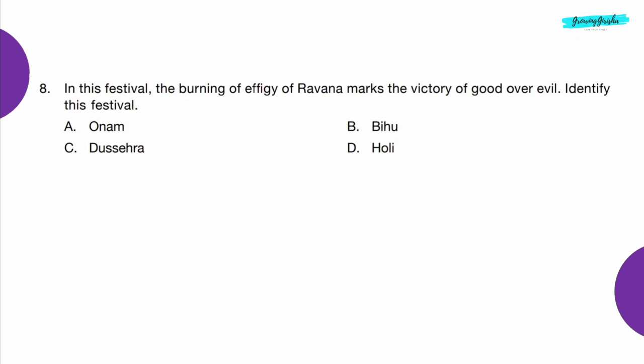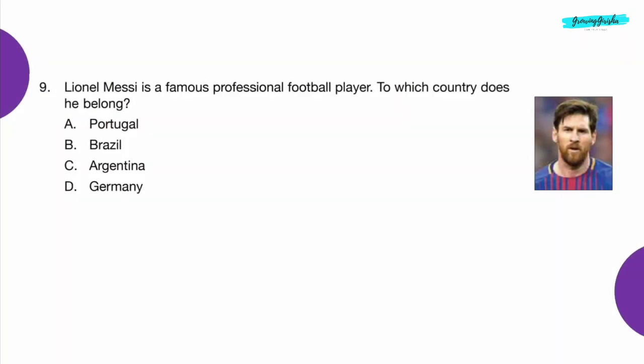Question 8: In this festival, the burning of the effigy of Ravan marks the victory of good over evil. Identify this festival. Option C — Dussehra.